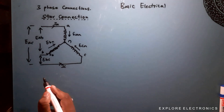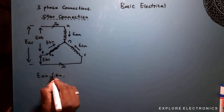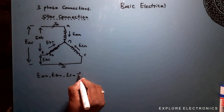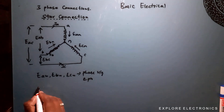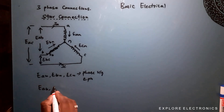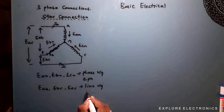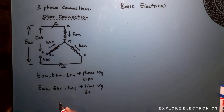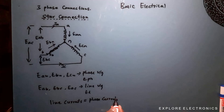In the star connection, EAN, EBN, and ECN are the phase voltages, all equal to E_phase. The line voltages EAB, EBC, and ECA are equal to E_line. The line currents IA, IB, and IC are equal to the phase currents — so we can write I_line equals I_phase.